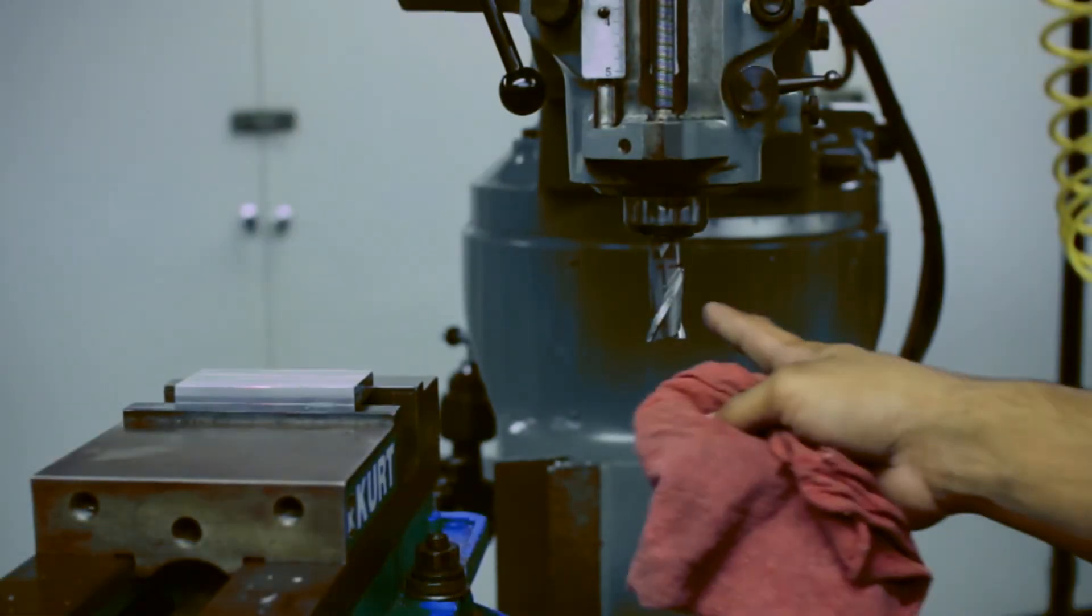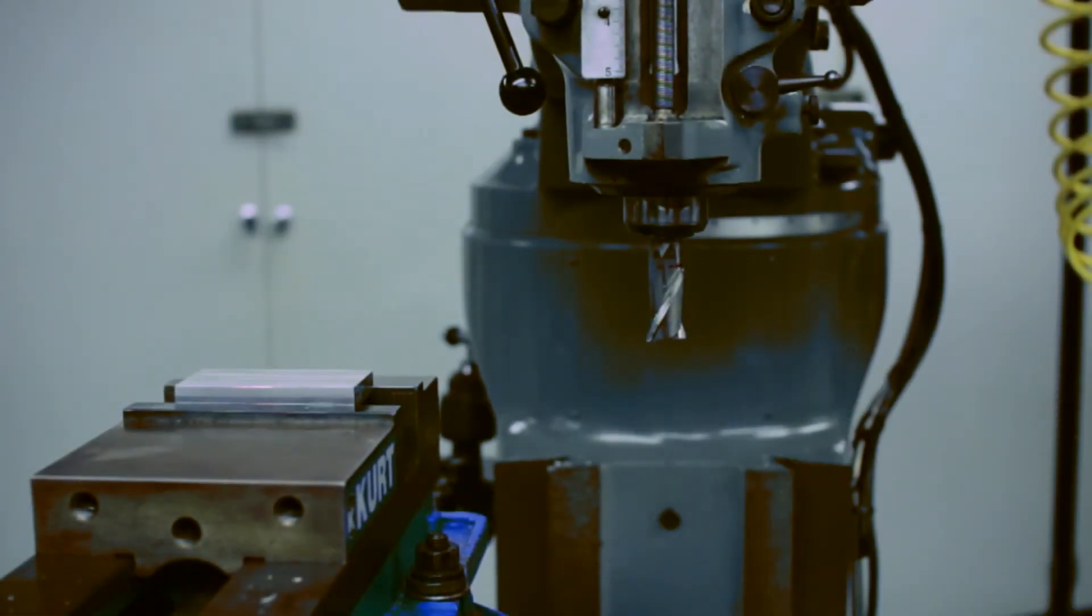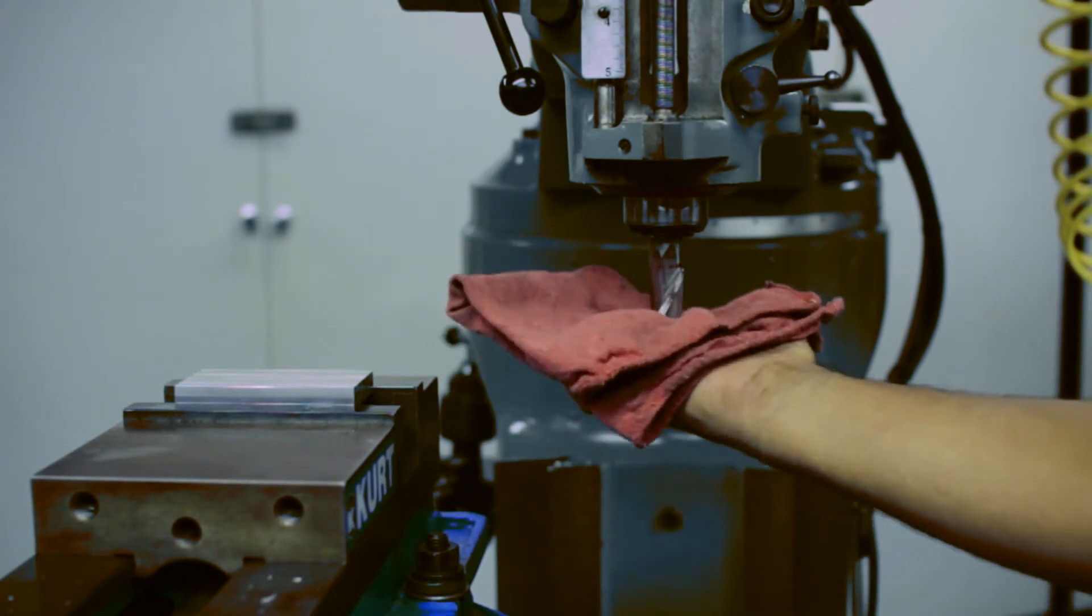Now we are going to remove this end mill. It is the same steps as before. The only difference is that you are going to push the OUT button instead of the IN button. One thing to make note of is to cup your hand under the tool.